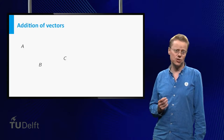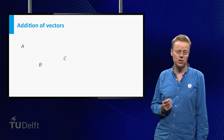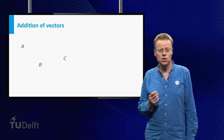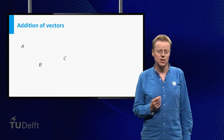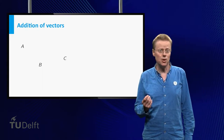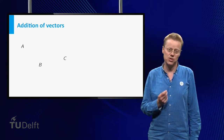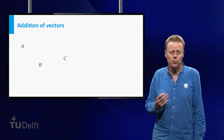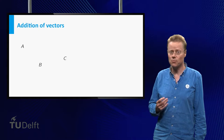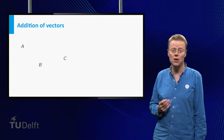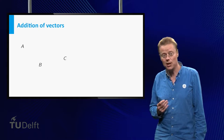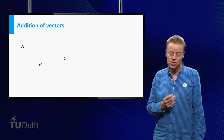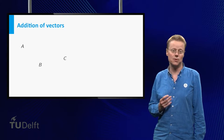There are various operations that can be applied to vectors. In this video we consider two of these: scalar multiplication and addition. We start with addition. These operations can be viewed from a geometric point of view as well as from an algebraic point of view. We start with the geometric view.